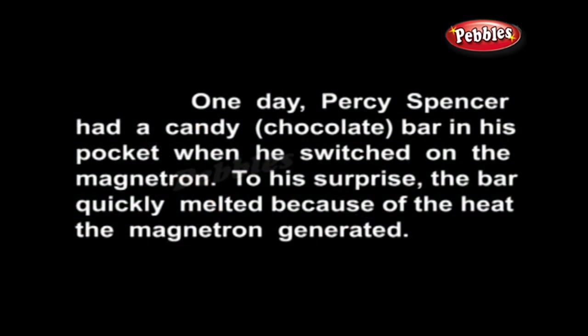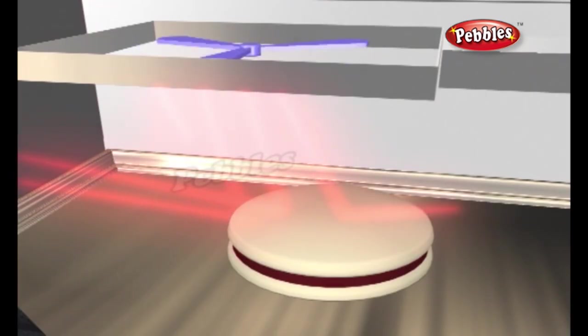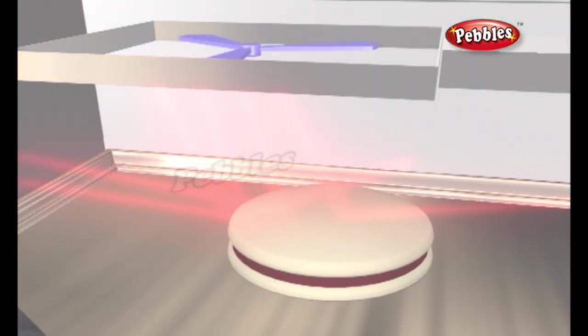One day, Percy Spencer had a candy bar in his pocket when he switched on the magnetron. To his surprise, the bar quickly melted because of the heat the magnetron generated. This gave him the idea that a magnetron might be used to cook food.